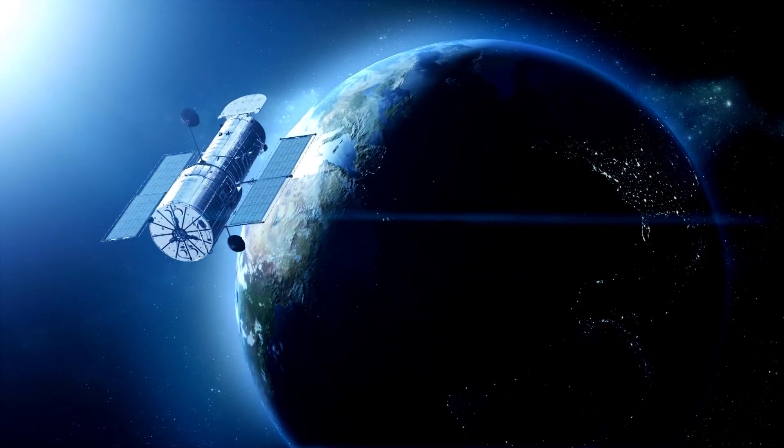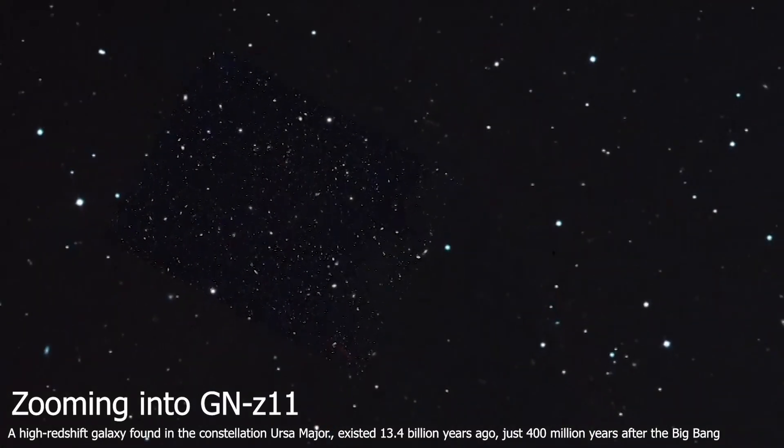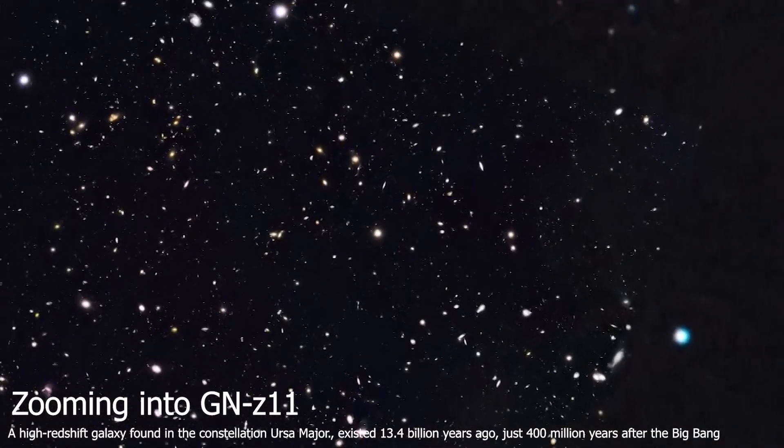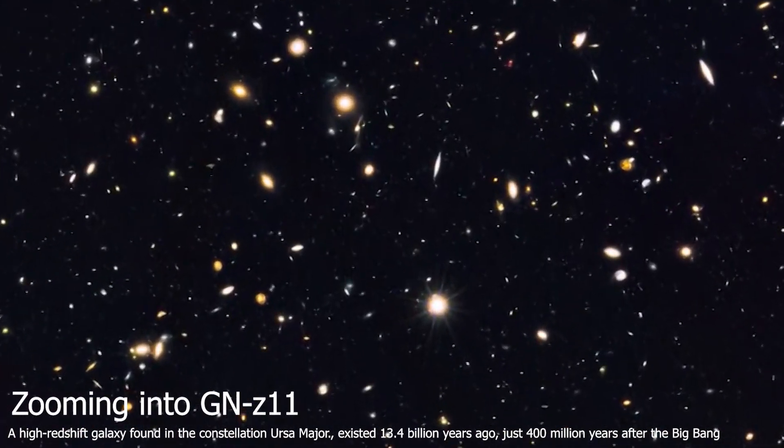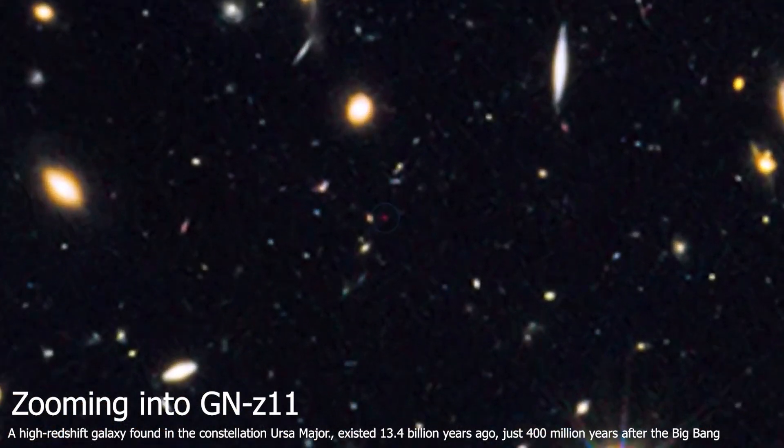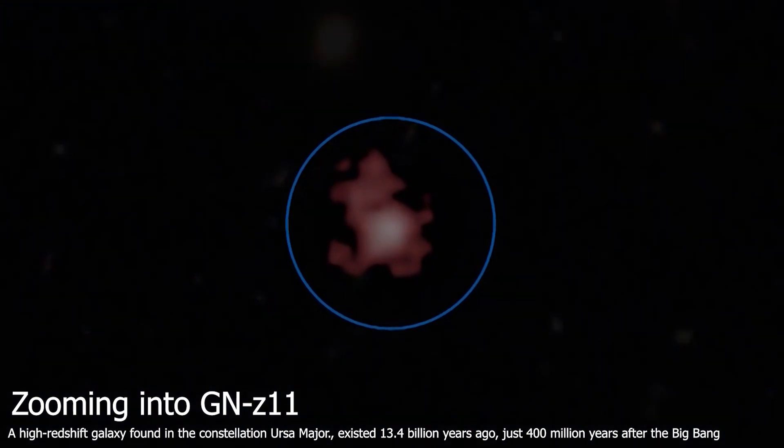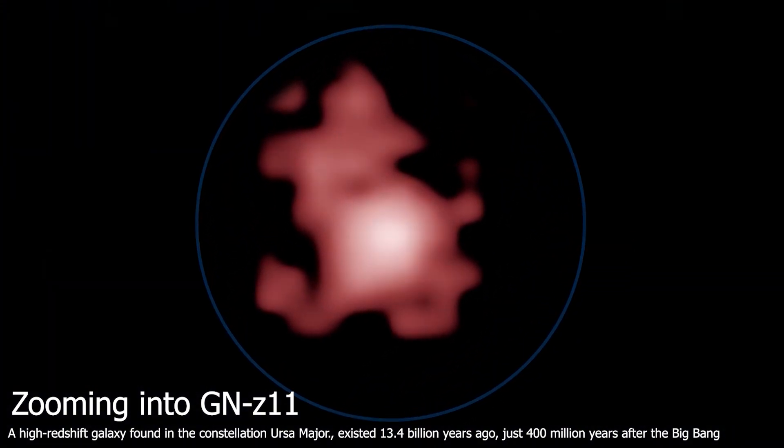However, Webb's predecessor, the Hubble Space Telescope, discovered our previous most distant galaxy, the unusual GNZ-11. This galaxy was found at a period when the universe was just 400 million years old, making it a bit closer to us.